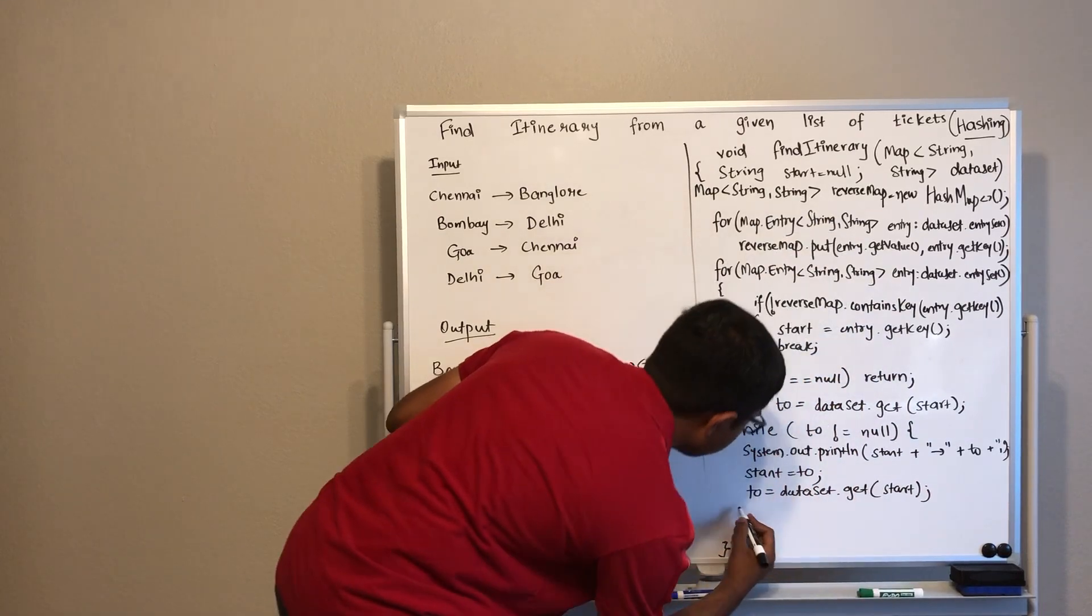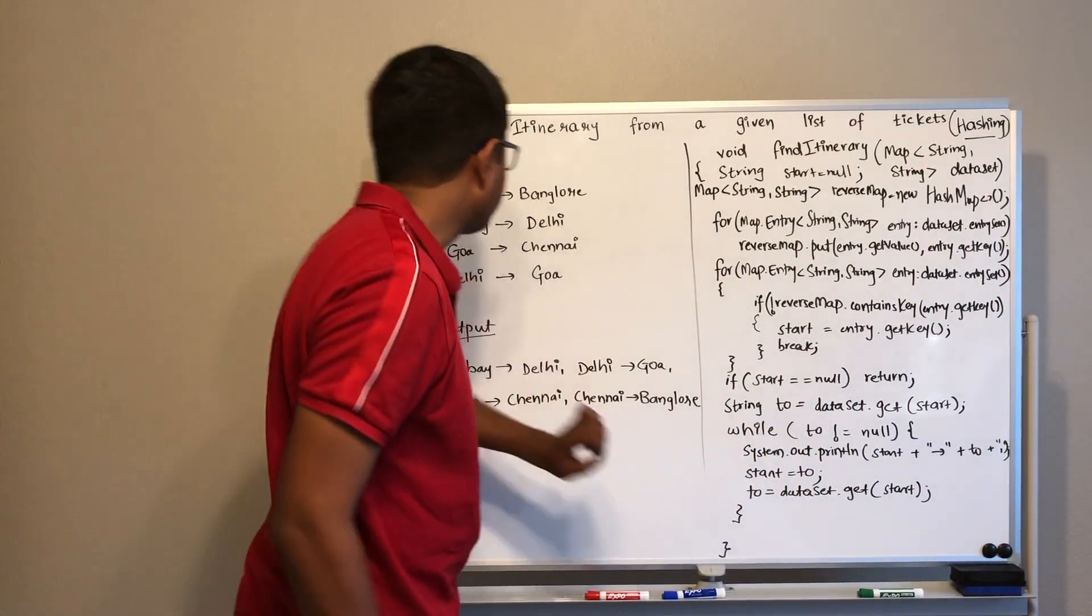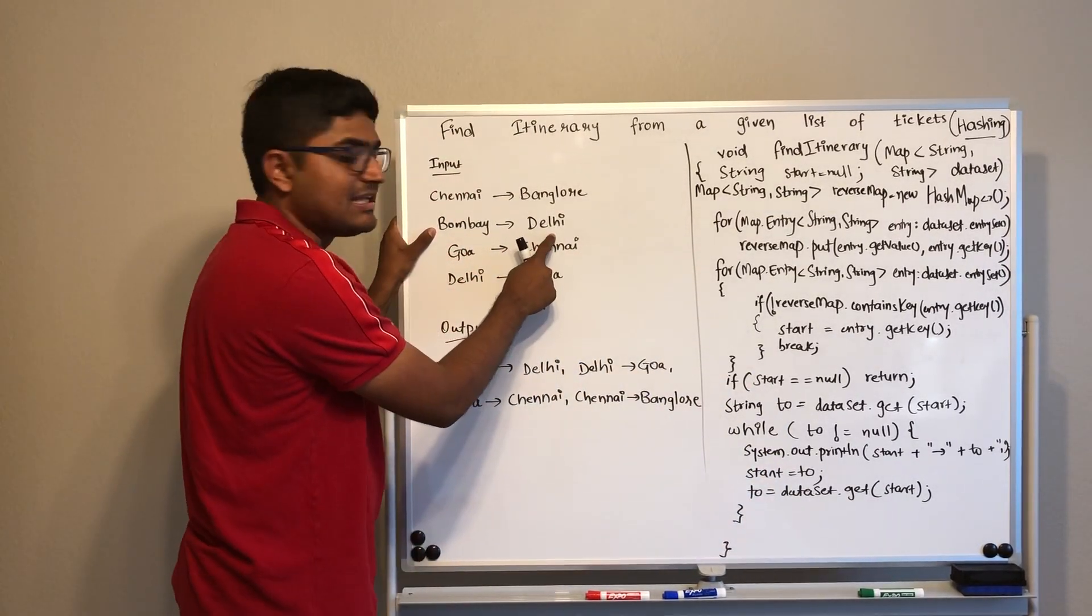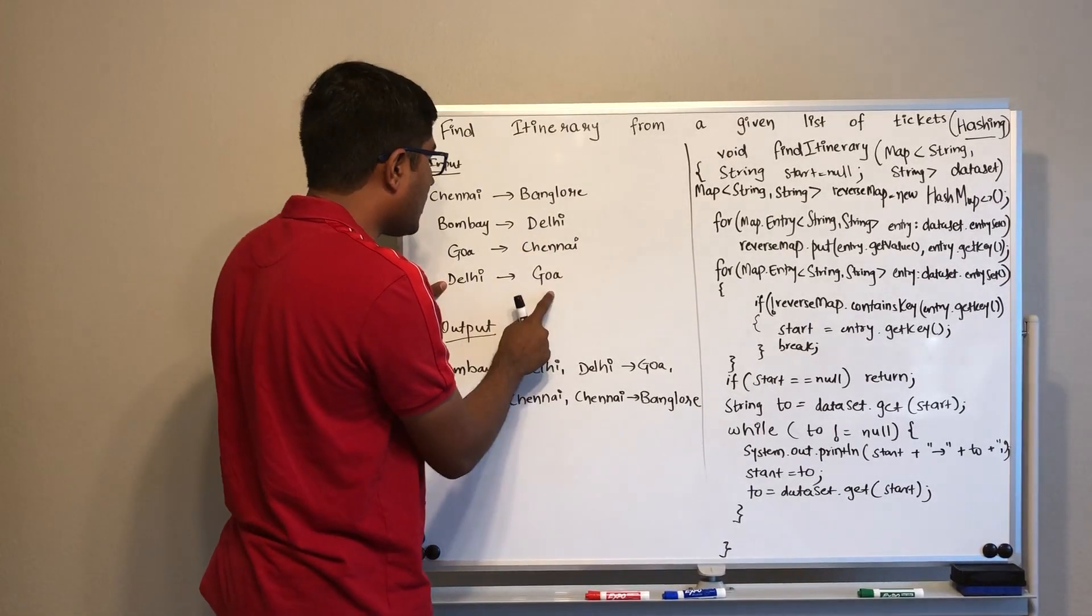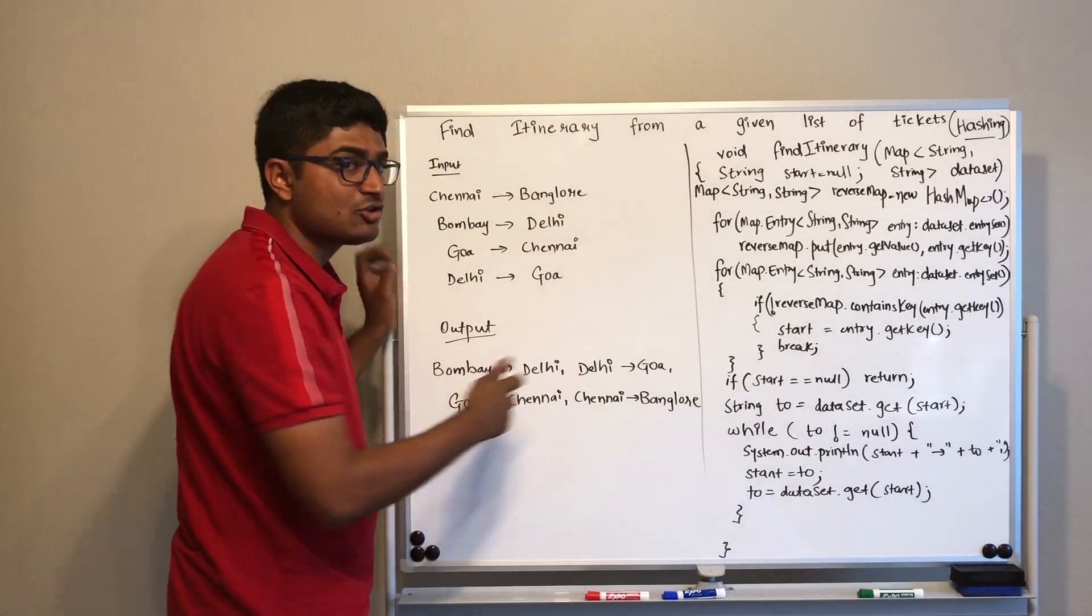So now if you see what happened here is, first we found Bombay as a starting point, then we found to as Delhi. We replaced Delhi as a starting point, then we found Goa, from Goa to Chennai, and then from Chennai to Bangalore. That is the actual output that we need.